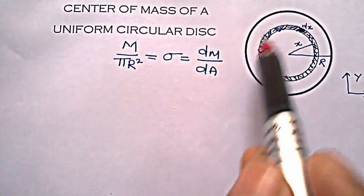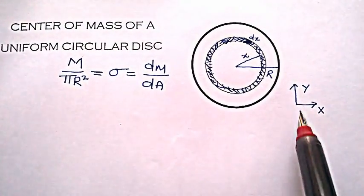So here is the uniform circular disk, here is my x and y axis.